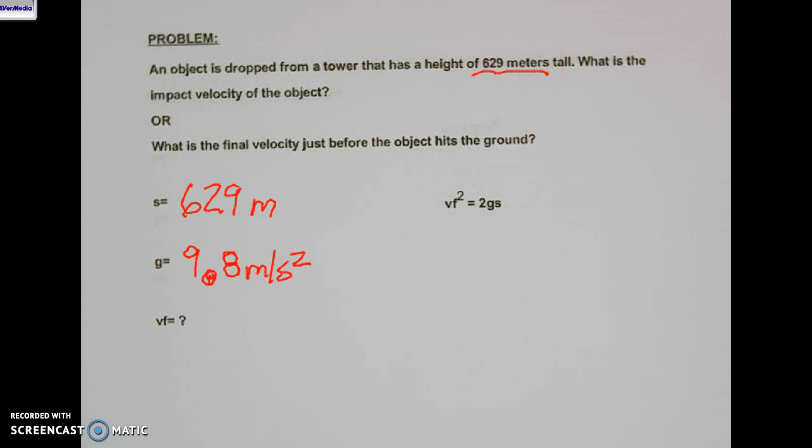And again, final velocity in the question, or in the formula, is squared, so we're going to have to square root both sides. But we'll get to that. So VF squared equals 2 times 9.8 meters per second squared. Let's see if we can get our decimal in there. That's a big decimal, but that'll work. So we're going to take 2 times 629 meters.